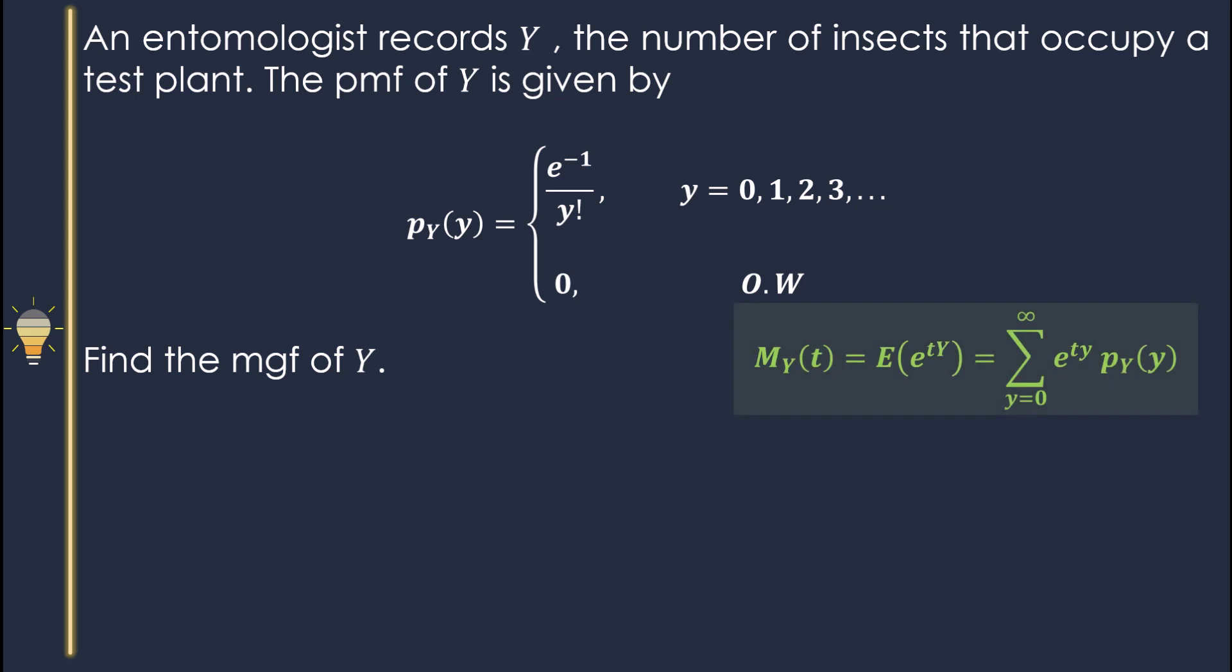What is the definition of the moment generating function? It is the expected value of e to the power tY. Since this is a discrete random variable, we use the summation: Y goes from zero to infinity, e^(tY) times the probability mass function.